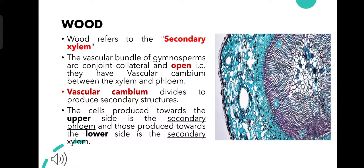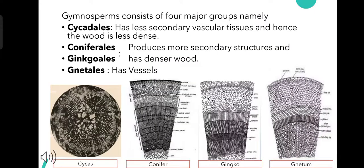Therefore, after division, the cells that are produced towards the upper side form the secondary phloem, and those produced towards the lower side form the secondary xylem. The gymnosperms are divided into four major groups and the wood or secondary xylem in these four groups differs in a slight manner.